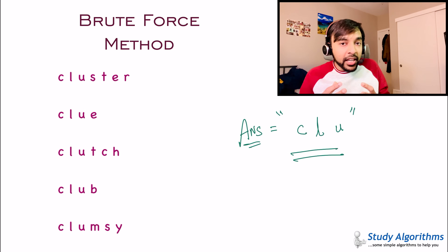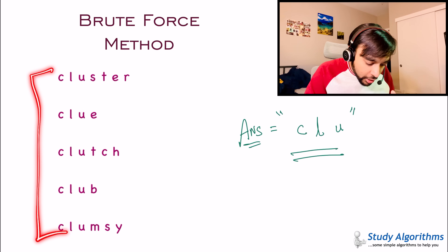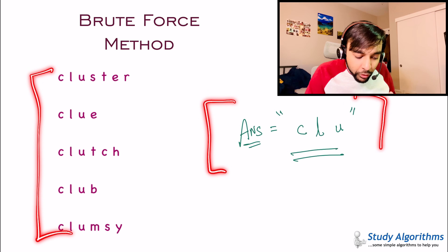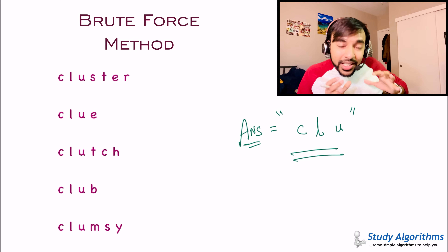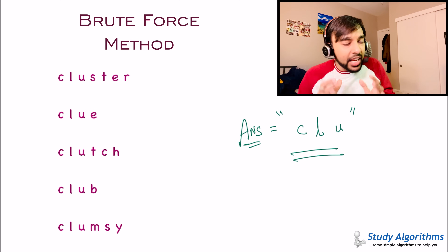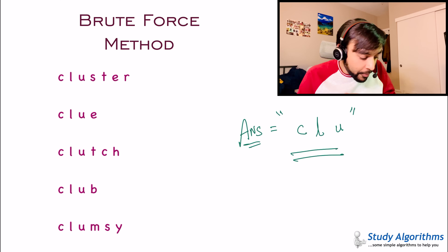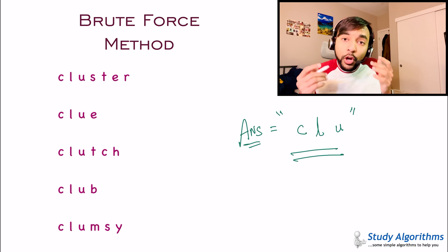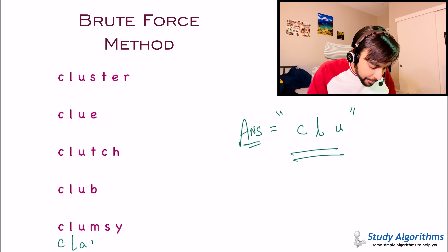Because you cannot find a string that is greater than this length. So you can safely say that for this set of strings, CLU would be the longest common prefix. This method is correct and it will give you a correct answer every time. But do you see the problem with this approach? What happens if you have more and more words? Let's say you have another word, 'class', and in between you also have so many words.